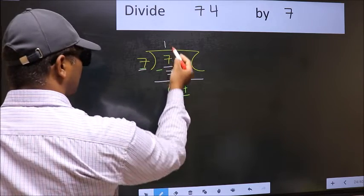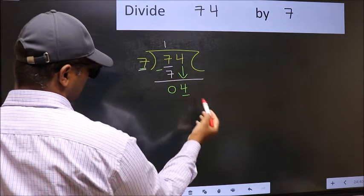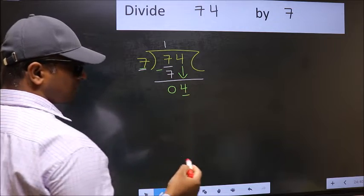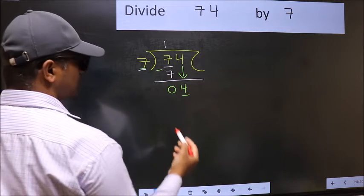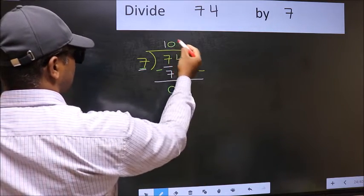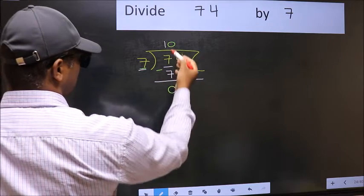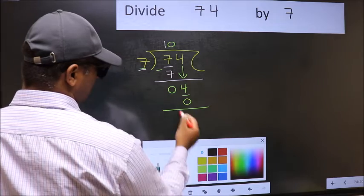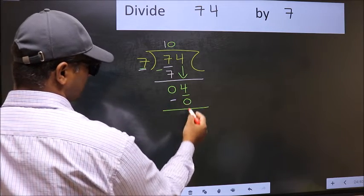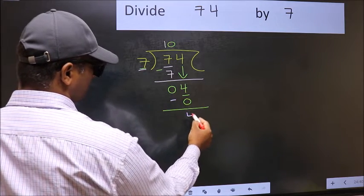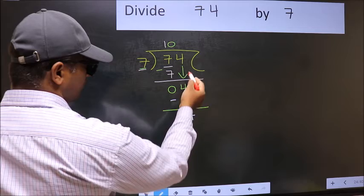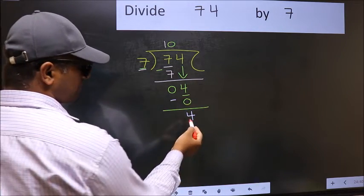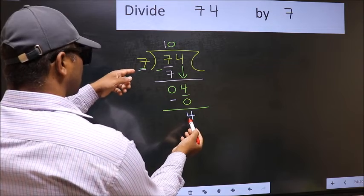If I take 1, we will get 7. But 7 is larger than 4. So what we should do is take 0. So 7 into 0 is 0. Now subtract: 4 minus 0 is 4. Over here we did not bring any number down, and 4 is still smaller than 7.